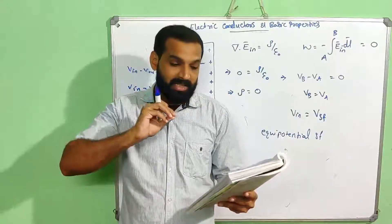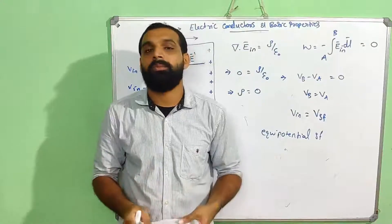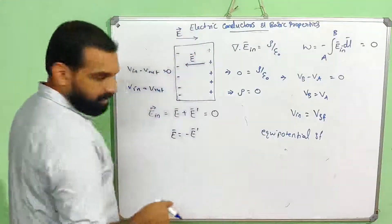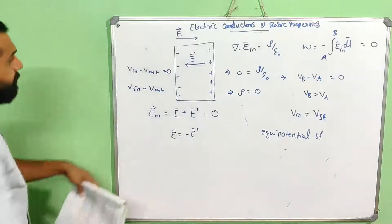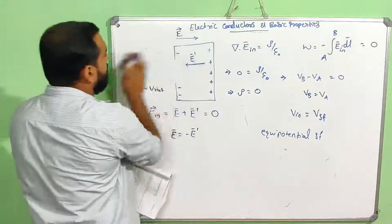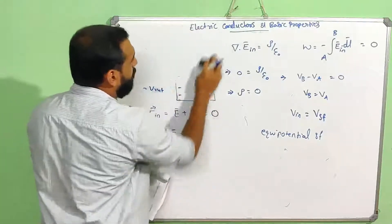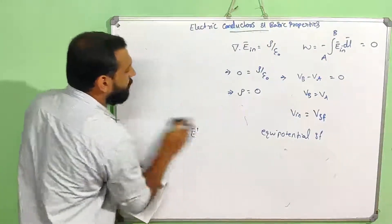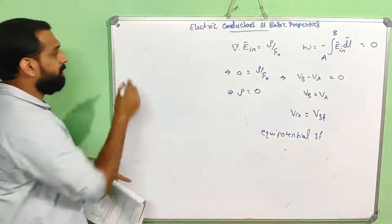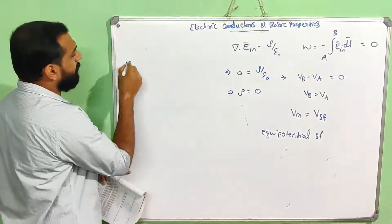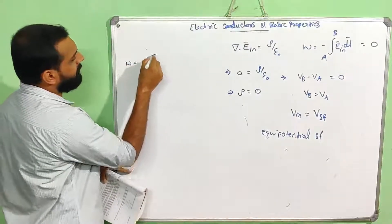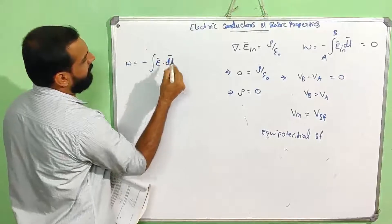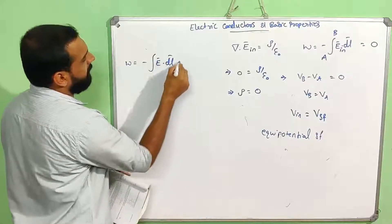Work done in moving charges across an equipotential surface: W equals minus integral of E dot dL. The potential difference is zero.